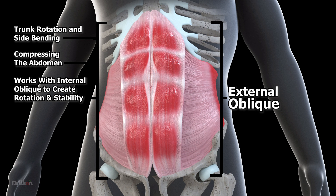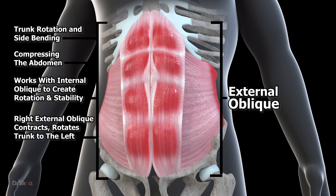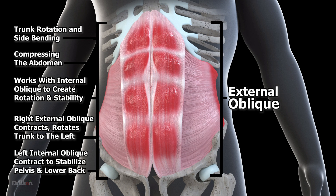When the right external oblique contracts, it rotates the trunk to the left, while the left internal oblique contracts to stabilize the pelvis and lower back.